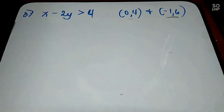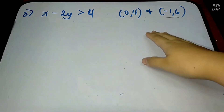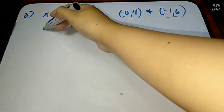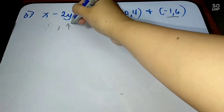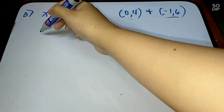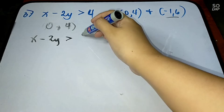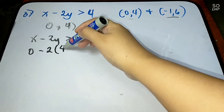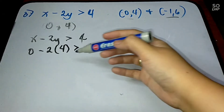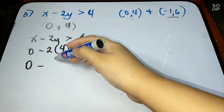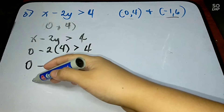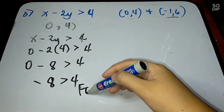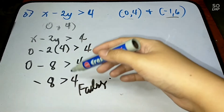Number 3: x minus 2y is greater than 4. We are going to find if (0, 4) and (-1, 6) are solutions. For (0, 4): substitute x minus 2y greater than 4 — change x into 0 minus 2 times 4, which equals 8, giving 0 minus 8 greater than 4. So, negative 8 is greater than 4. Is that correct? No. This is false, because negative 8 should be less than 4.